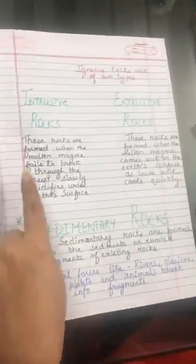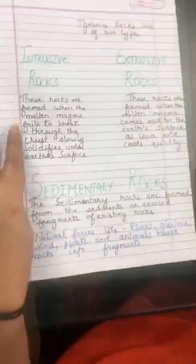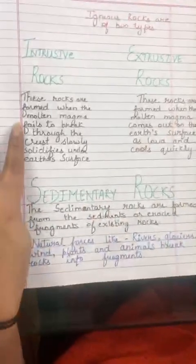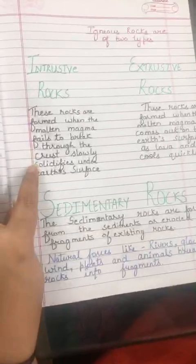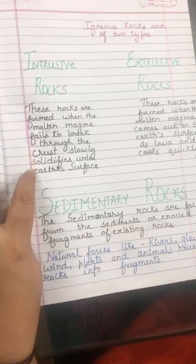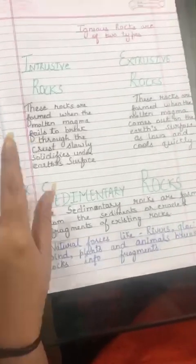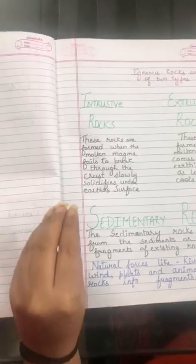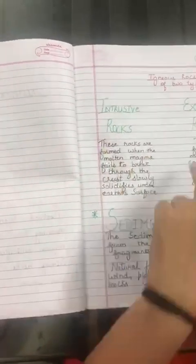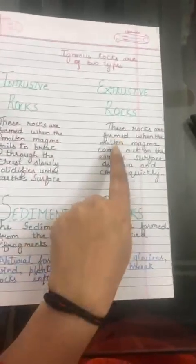Igneous rock can be classified into two types: intrusive rock and extrusive rock. Intrusive rocks are formed when the molten magma fails to break through the crust and slowly solidifies under the earth's surface — that means when the molten magma is unable to come out, intrusive rocks are formed.